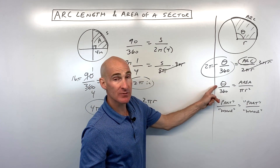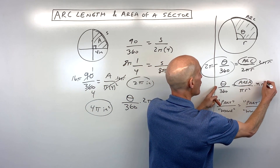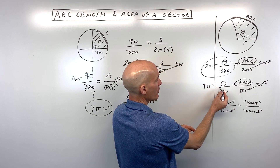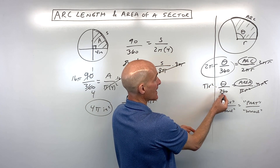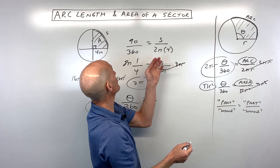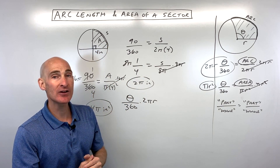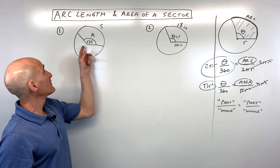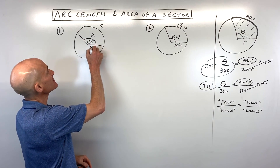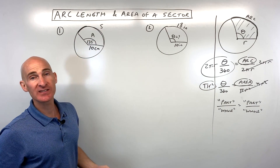If you don't like the proportion method, you can multiply both sides by πr² — taking theta over 360, which is the fraction of the whole circle, times the area of the whole circle gives you just the area of the sector. Now let's do two examples. For number one, we're given a central angle of 135 degrees and a radius of 10 centimeters, and we want to find the arc length as well as the area of the sector.